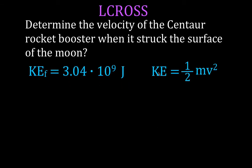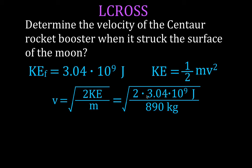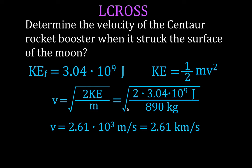Now we solve for the final velocity using KE = ½mv². Multiply both sides by 2, divide by m, then take the square root: v = √(2·KE/m). Plugging in: v = √(2 × 3.04 × 10⁹ / 890). The final velocity when the booster rocket struck the surface of the moon was 2.61 × 10³ m/s, or 2.61 km/s — approximately 5800 miles per hour.